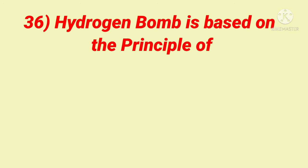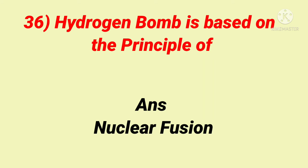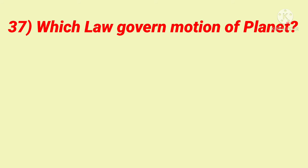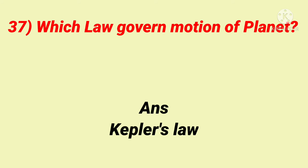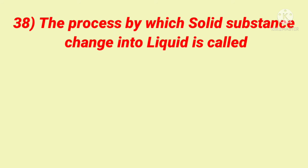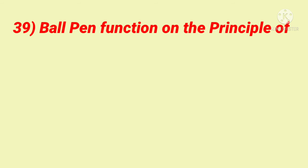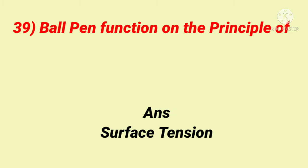The Hydrogen bomb is based on the principle of nuclear fusion. Which law governs the motion of planets? Kepler's law. The process by which solid substances change into liquid is called melting. The ball pen functions on the principle of surface tension.